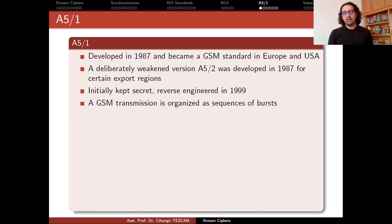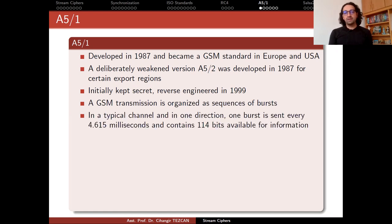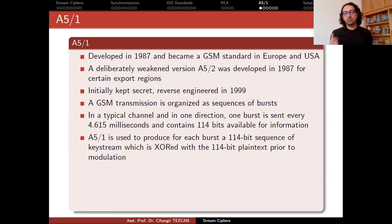In order to understand how A5/1 works, let's look at how GSM communication works. A GSM transmission is organized as sequences of bursts. In a typical channel and in one direction, one burst is sent every 4.615 milliseconds and contains 114 bits available for information. A5/1 is used to produce for each burst a 114-bit sequence of key stream, which is XORed with the 114-bit plain text prior to modulation.